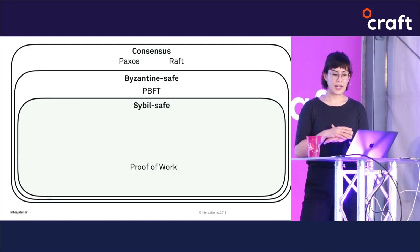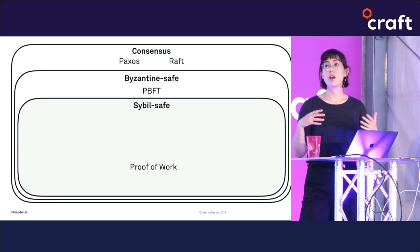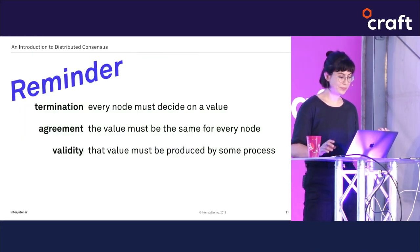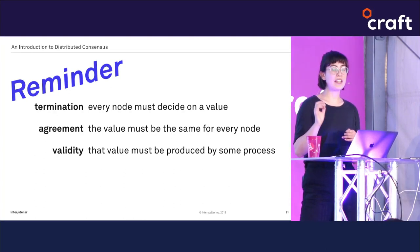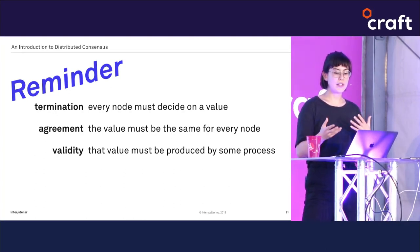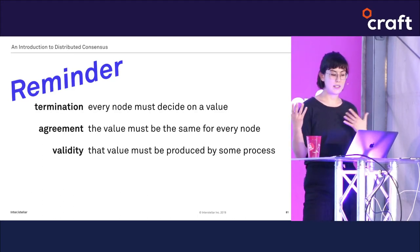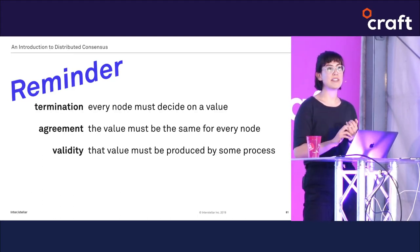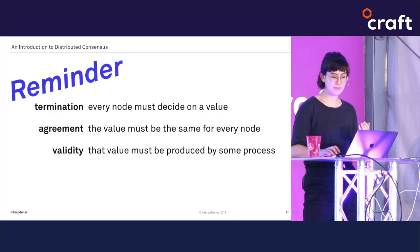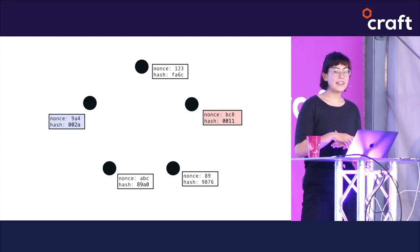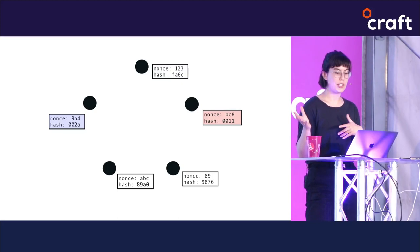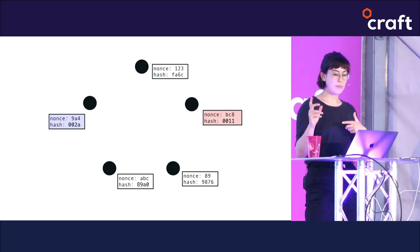Now it's safe to put proof of work in our Sybil-safe box. But proof of work has problems — both theoretical and practical. Any algorithm that solves the consensus problem has to have the three properties: termination, agreement, and validity. Let's keep this in mind as we imagine a scenario where two different nodes propose different blocks at the same time — call them the purple block and the red block.